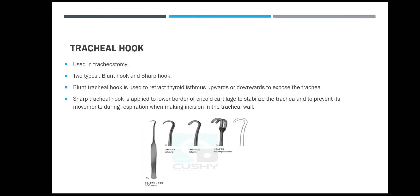Tracheal hook is used in tracheostomy and it is of two types: blunt hook and sharp hook. Blunt tracheal hook is used to retract the thyroid isthmus upwards or downwards to expose the trachea. Sharp tracheal hook is applied to the lower border of the cricoid cartilage to stabilize the trachea and to prevent its movements during respiration when making an incision in the tracheal wall. This is the picture showing tracheal hook with blunt and sharp hooks.